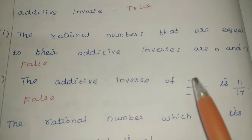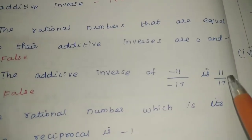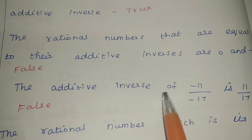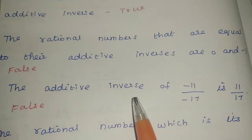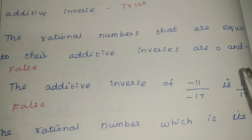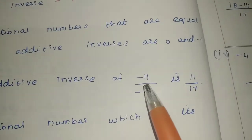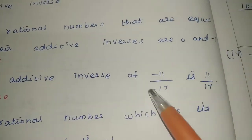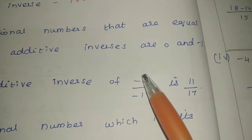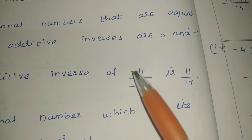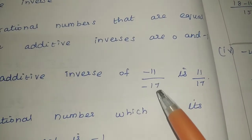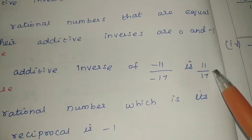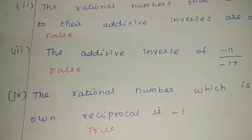The additive inverse of minus 11 by minus 17 is 11 by 17. If you add a positive value and a negative value you get 0. Denominator and numerator: the minus cancels, cancel, cancel. The value is 11 by 17. If 11 by 17 is positive, the additive inverse is negative. Since the statement says positive, the statement is false.